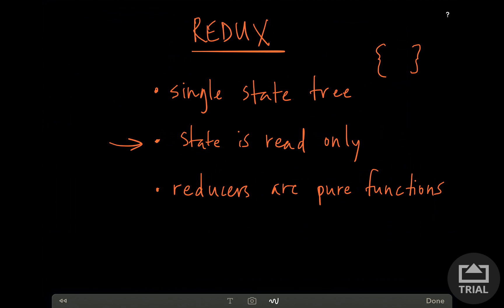The second point is that state is read-only. This means that nothing is writing to state, nothing is changing state directly. No components in your app are changing state — they are going through actions, basically describing what they want done. We saw that in our last video talking about Flux, where components and any event that happens can fire off an action. In some implementations of Flux, these actions result in writing to state, modifying state. And as we know, when you modify something over time, it gets hard to debug and hard to know what's going on.